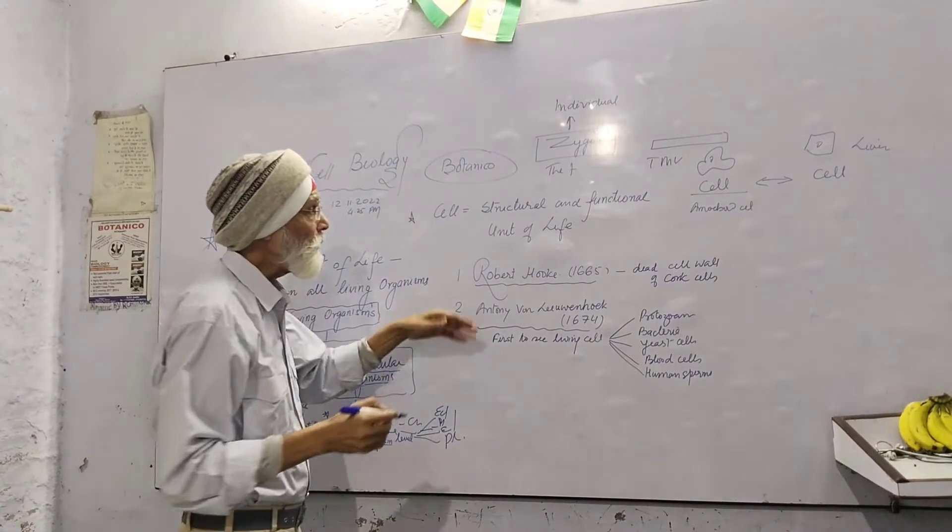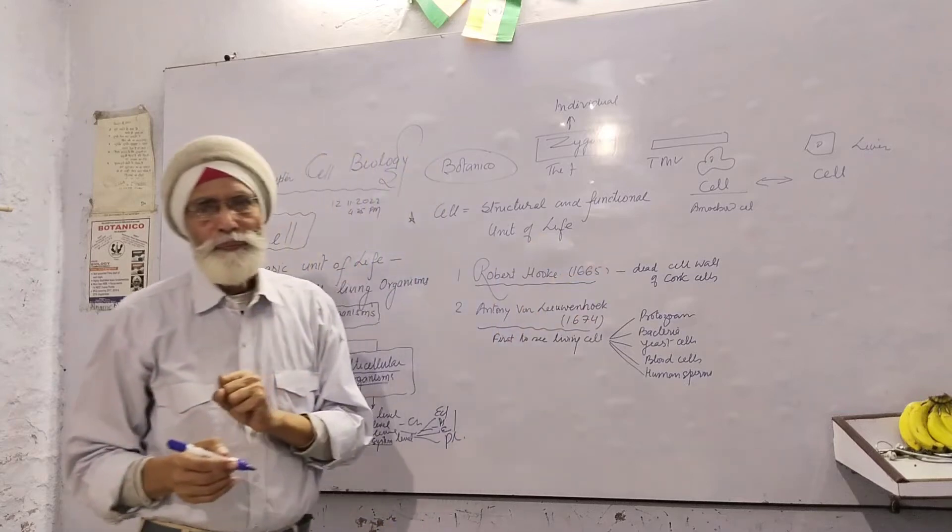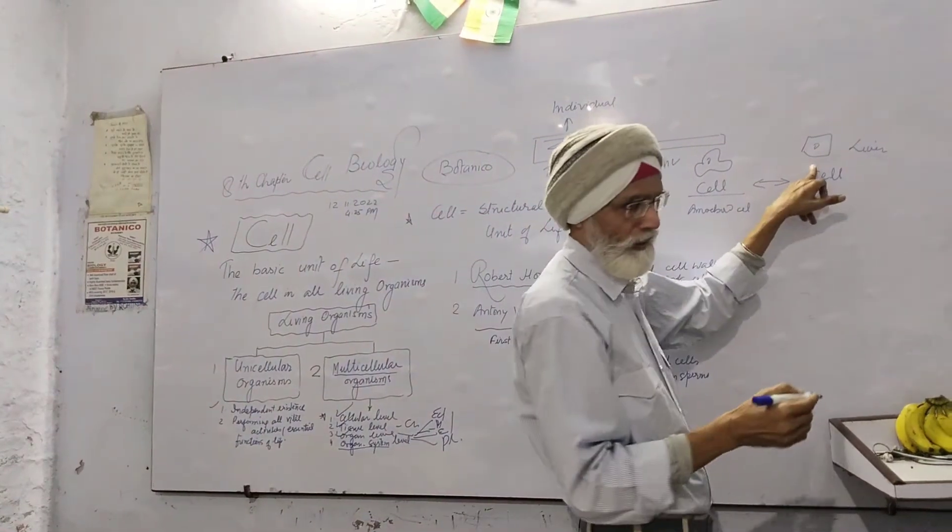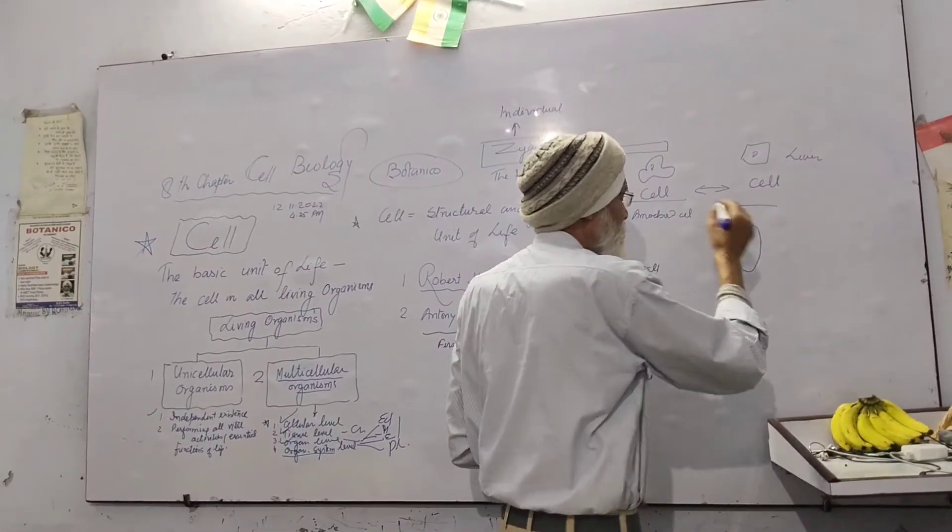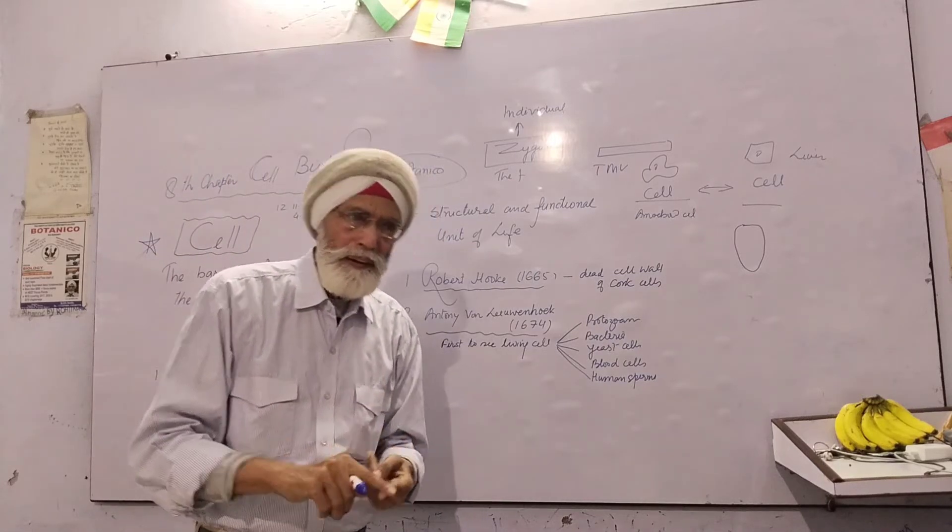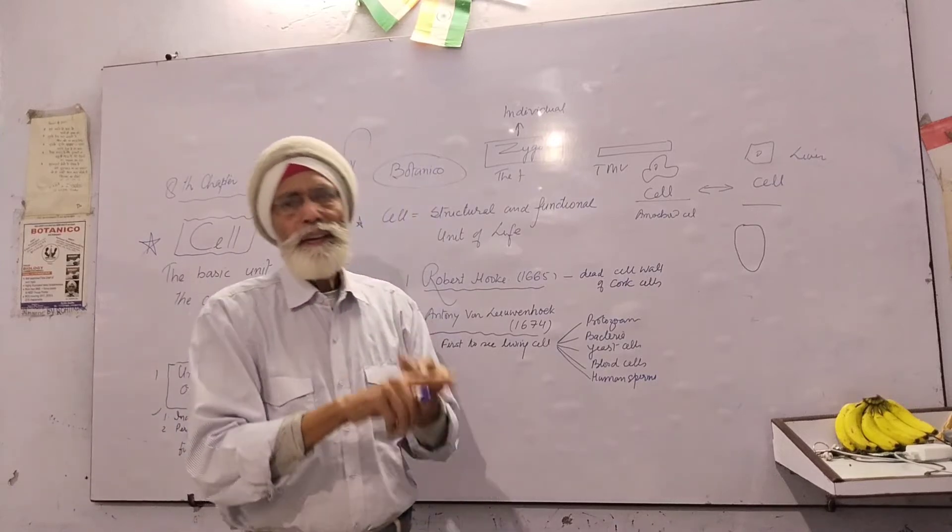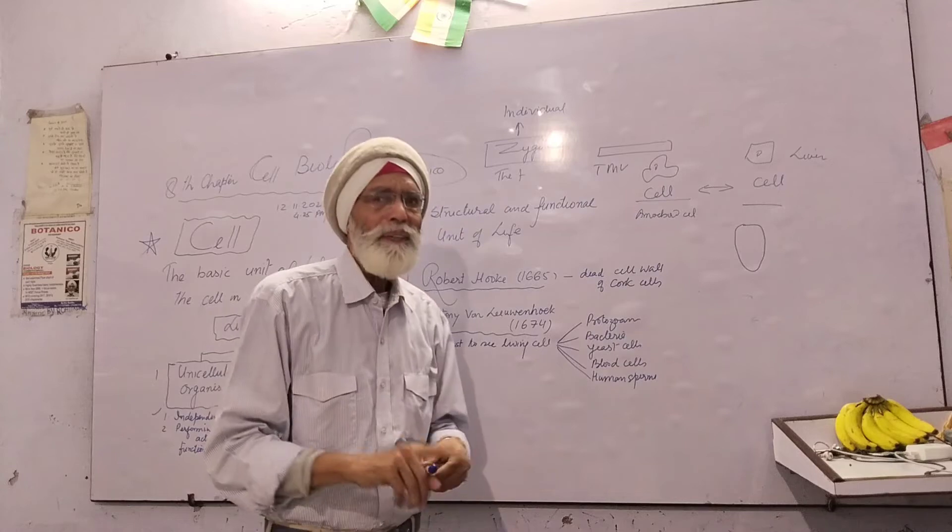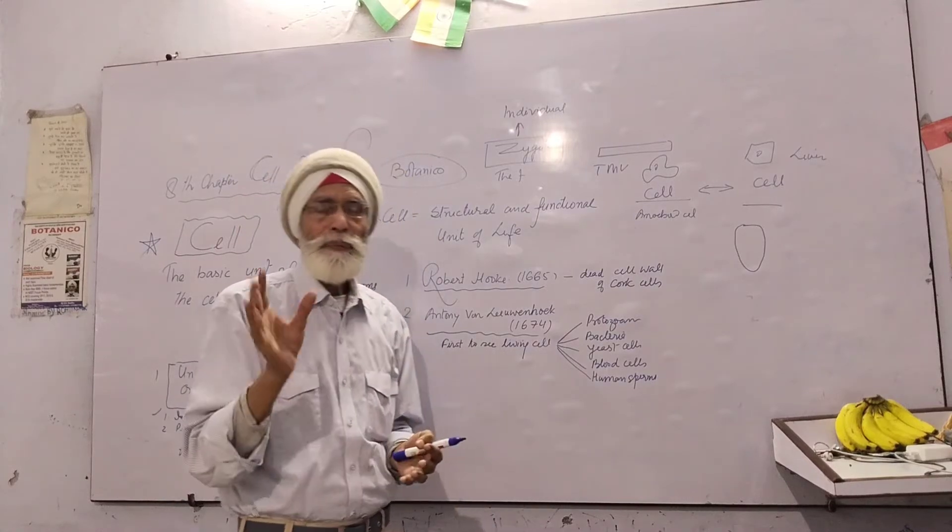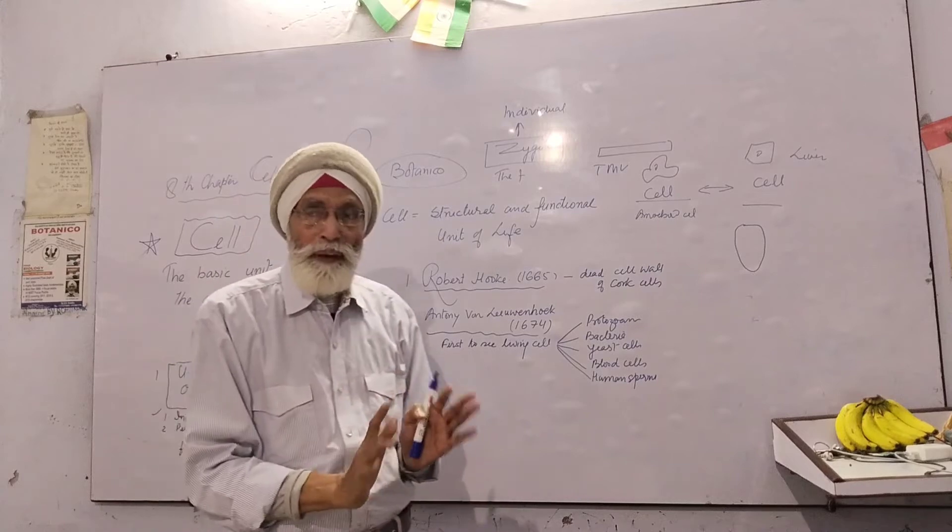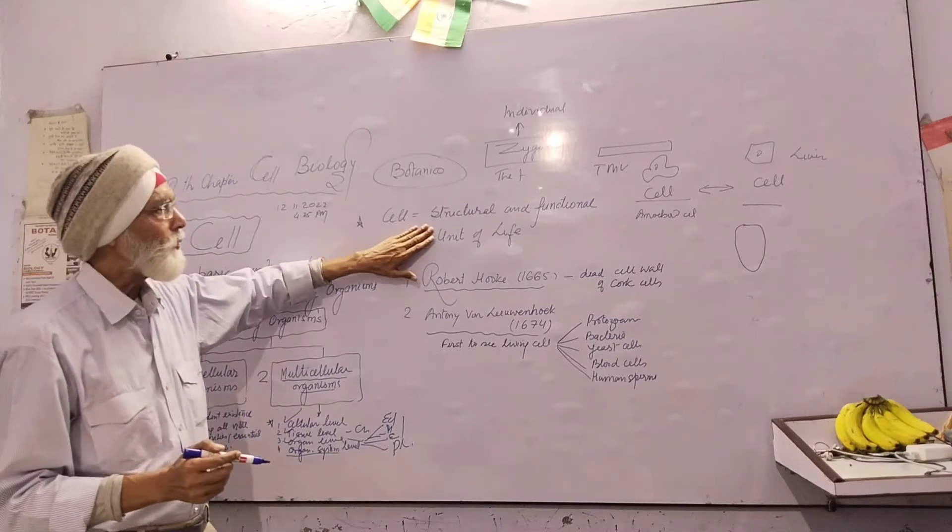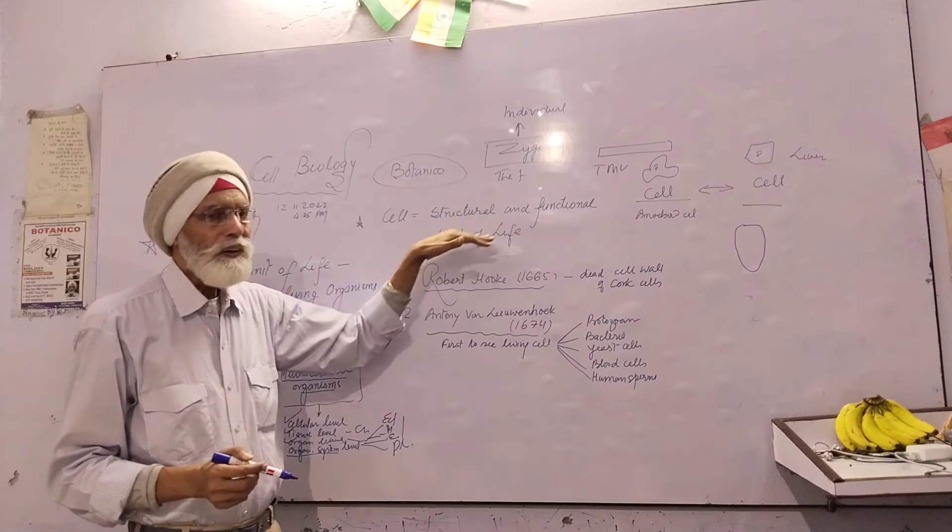Another very important point: why do we call the cell a structural and functional unit? In all living bodies, if you consider the liver cell, it has a structure. If the structure is there, the function is also there. If there's a change in structure, there's a change in function. Various types of cells have different structures to perform different functions. Respiratory cells in the lungs perform respiration, while liver cells perform functions of the digestive system. The cell is the structural and functional unit of life because each structure performs a particular function.